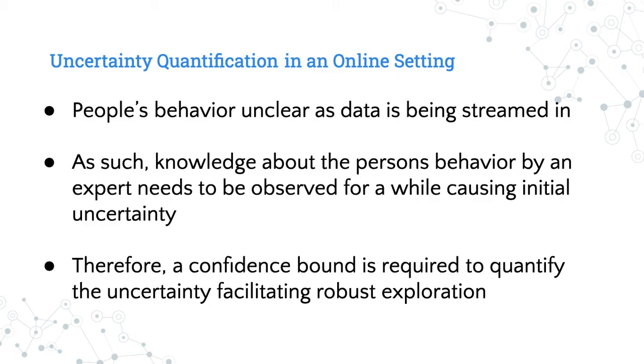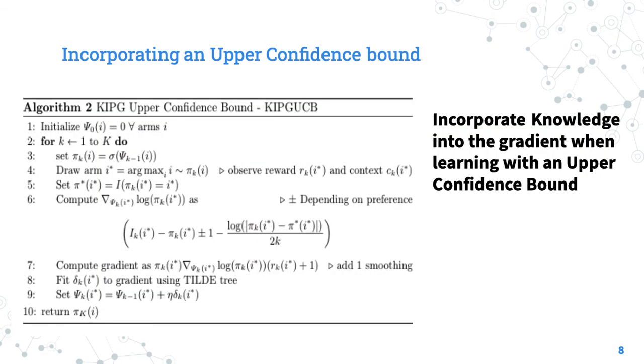We derive an upper confidence bound. The math of which I will leave in the paper as it is a little involved. I'll show you here how the upper confidence bound looks. You can see in step six, in addition to the knowledge adjustment, which is plus or minus one, there is a quantity that is the upper confidence bound and depends on the iteration k, as the traditional confidence bound does. It has the effect that it explores using this bound initially, and later on this bound causes a more aggressive exploitation as more and more data is observed.